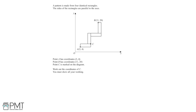In this question, we have a pattern made from four identical rectangles. The sides of the rectangles are parallel to the axes. Point A has coordinates (3, 4), point B has coordinates (11, 20), and point C is marked on the diagram. We need to work out the coordinates of point C.